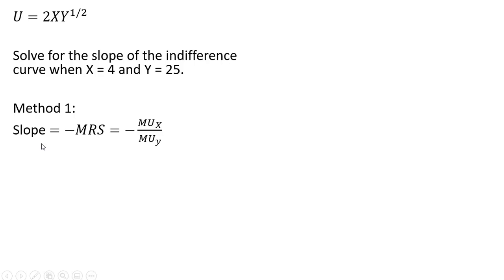Method one is to calculate the marginal rate of substitution and take the negative result of that. The marginal rate of substitution is going to be the marginal utility of good x divided by the marginal utility of good y, and then we just put a minus sign in front of that.